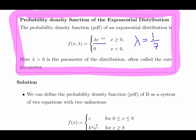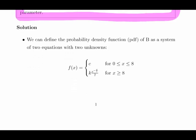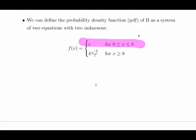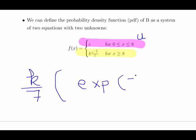We can define the probability distribution of B. B is the one we're actually going to be working with, and that is f of x equals c for 0 to 8, that's the uniform component. The bottom part is exponential: k over 7 times the exponential of minus x over 7.